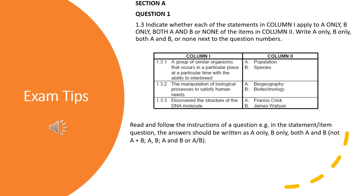Another type of question from Section A is where two columns are given. The first column contains a description or statement, and column two contains two items or terms. Follow the instructions very carefully. You have to indicate whether each of the statements in column one applies to A only, B only, both A and B, or none of the items in column two. Write A only, B only, both A and B, or none next to your question number.